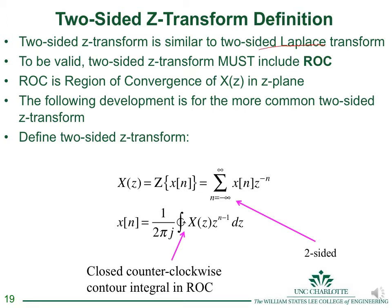The two-sided Z-transform is similar to the two-sided Laplace. An important condition is that the two-sided Z-transform must include the region of convergence (ROC). Two different signals can have the same X(z) but different ROCs, so to make the transform unique and one-to-one, you must include the ROC — just as with the Laplace plane.